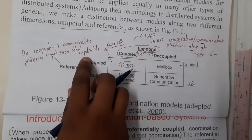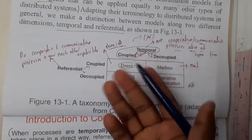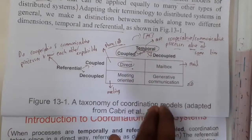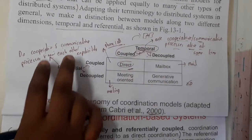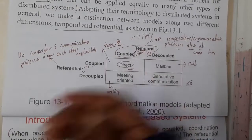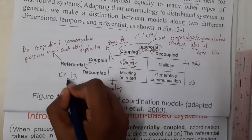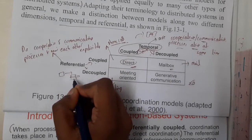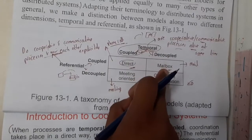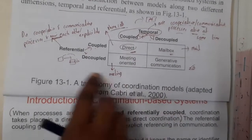You both know each other — you are talking with your friend because you know him. Now if you know someone but you are not communicating at the same time, that could be a mailbox. You send a mail to a person — you need to know their email ID, so you indirectly know who that person is. That is referentially coupled but temporally decoupled, because you are not sending mails at the same time.